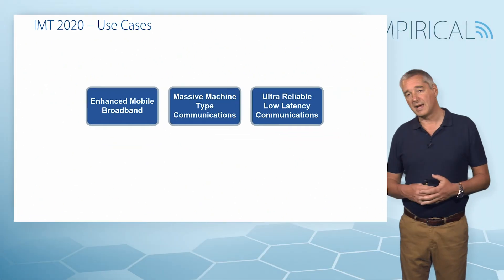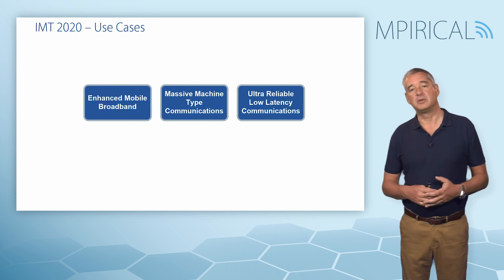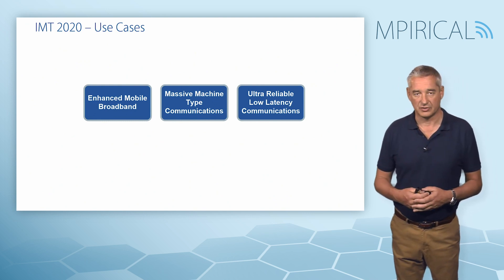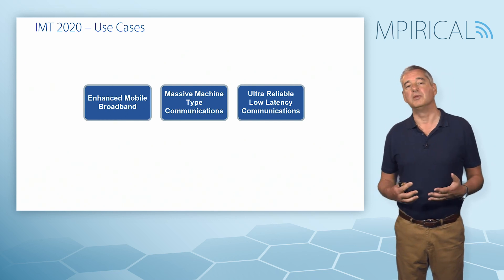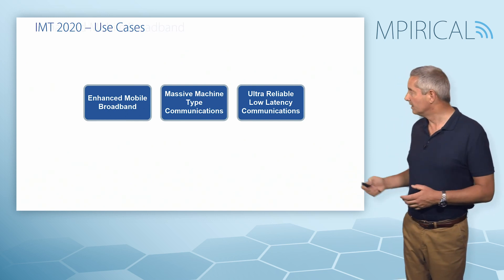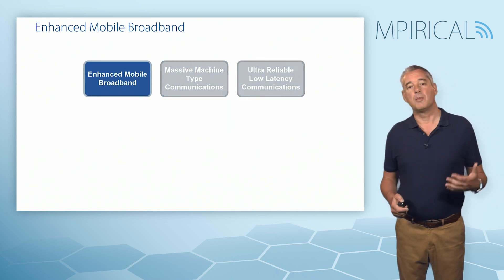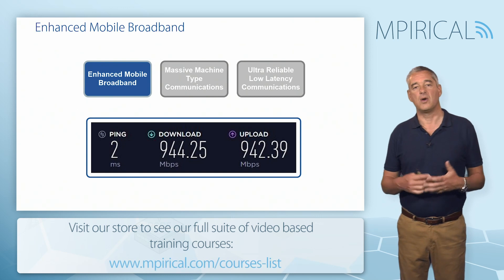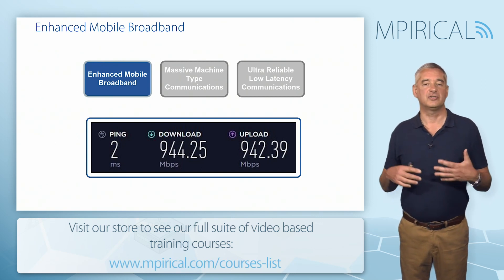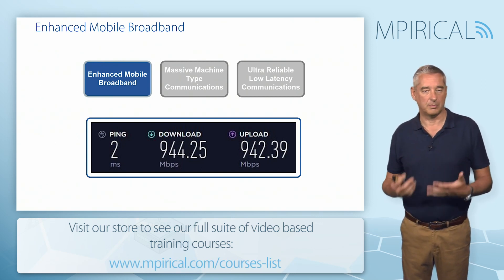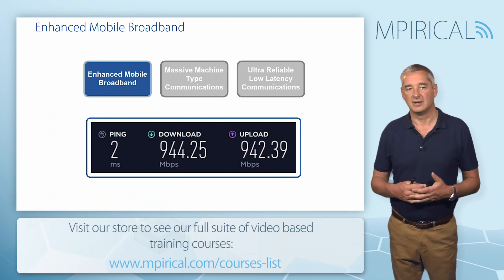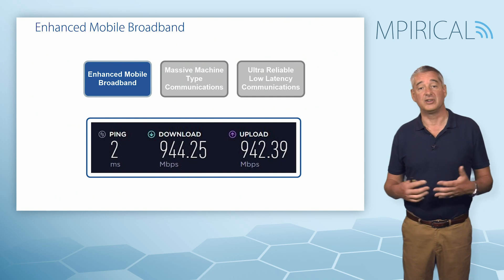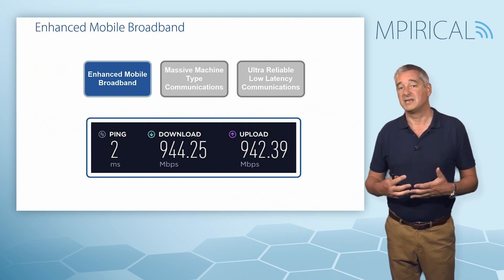The three use cases are: enhanced mobile broadband, massive machine type communications, and ultra-reliable low latency communications. Enhanced mobile broadband is all about providing high-speed data connections wherever we may be — not just in city centres, but also suburban and rural areas — and ensuring high-speed connections at sporting events in stadiums or potentially concerts.